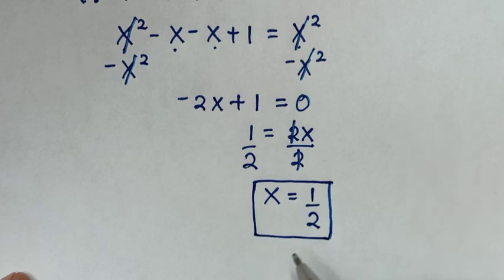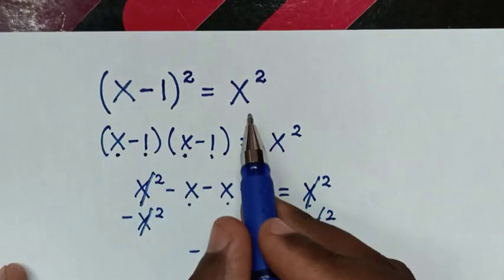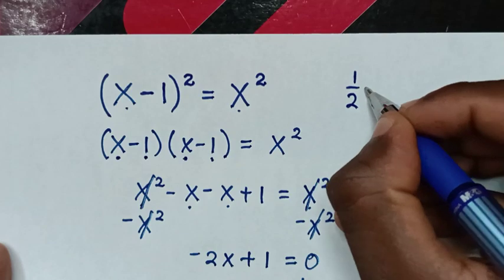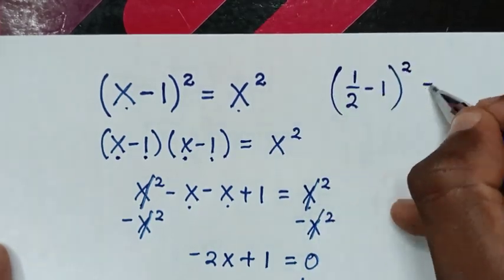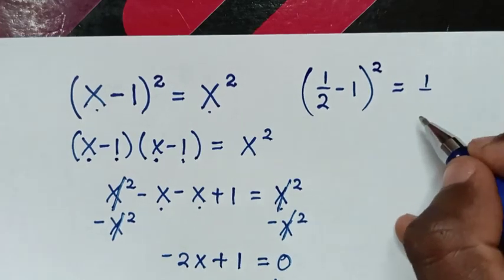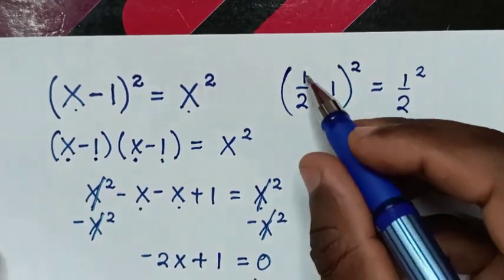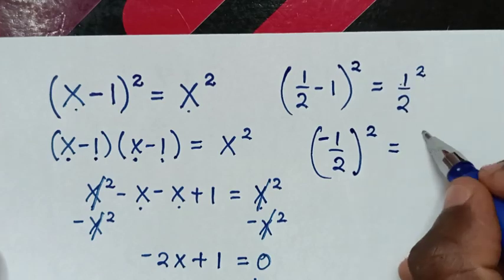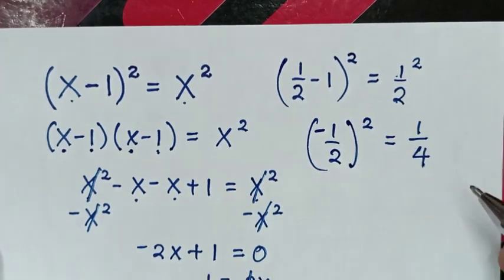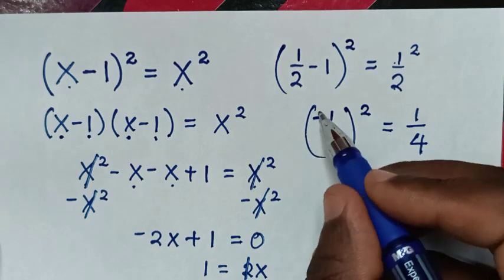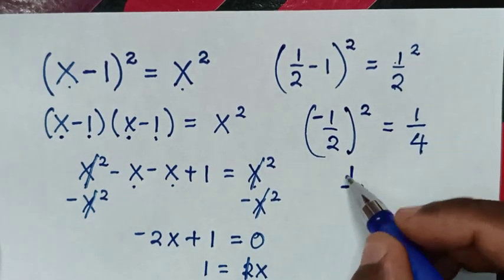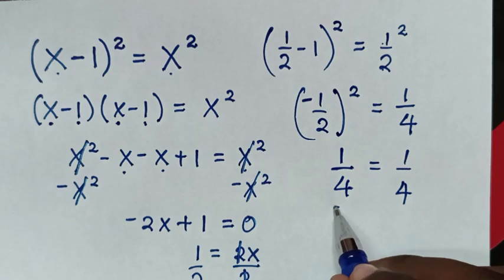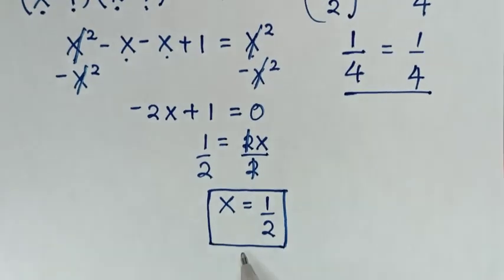Now to check if this value of x is correct, we substitute x equals one half into the original problem. It becomes (one half minus 1) squared equals (one half) squared. One half minus 1 is negative one half, so (negative one half) squared equals 1 over 4. And one half squared is also 1 over 4. The left side and right side are equal, confirming x equals one half is correct.